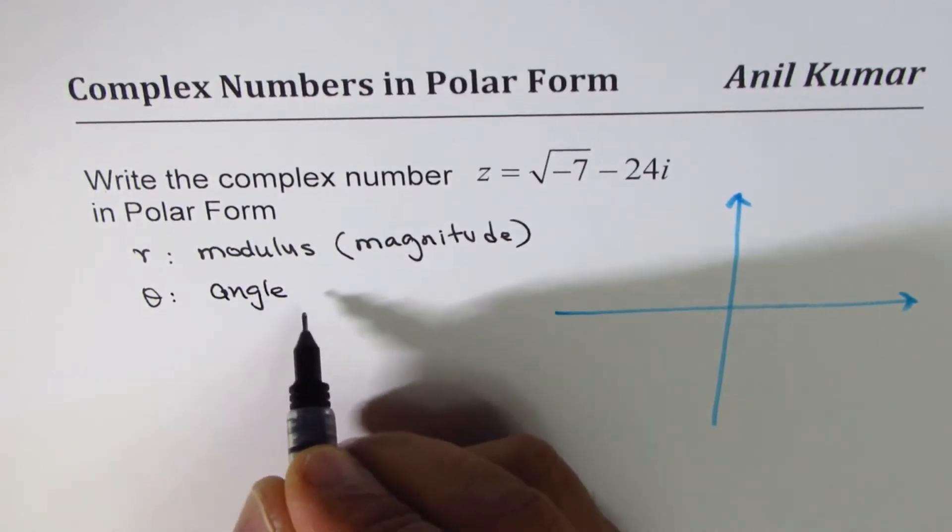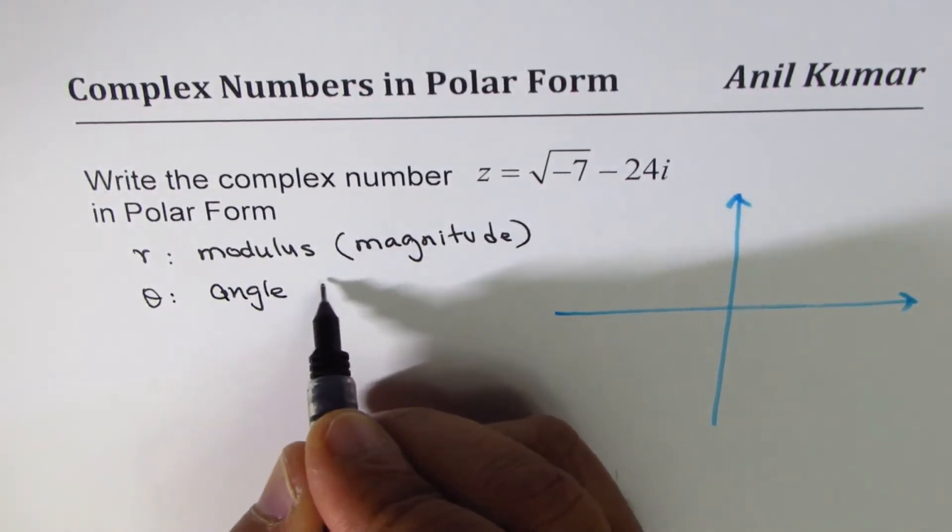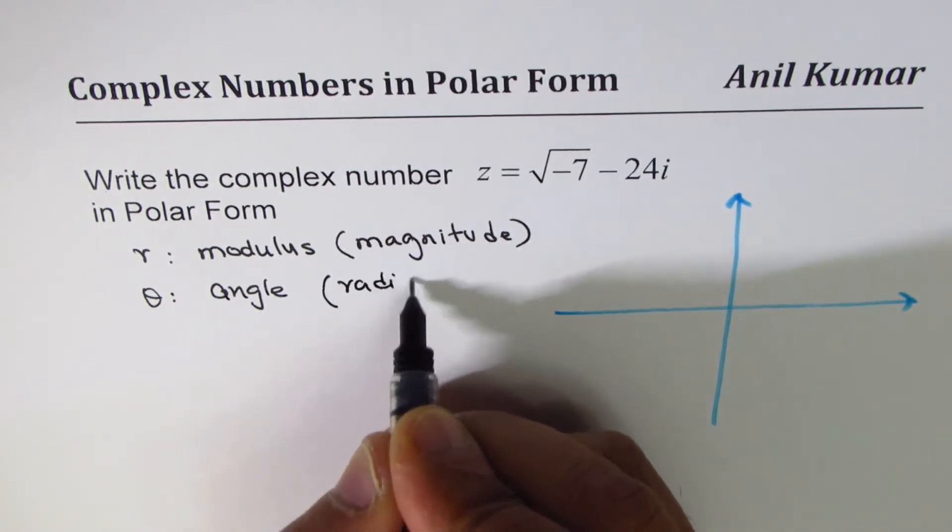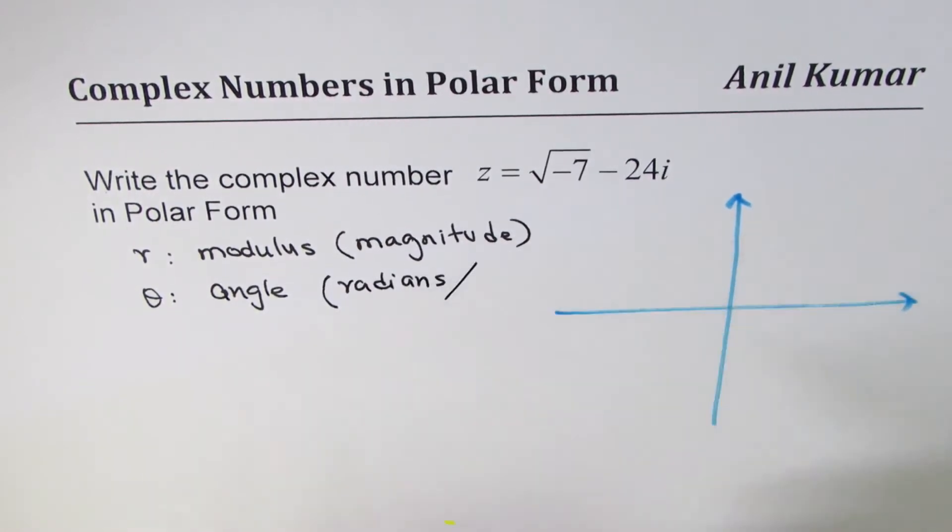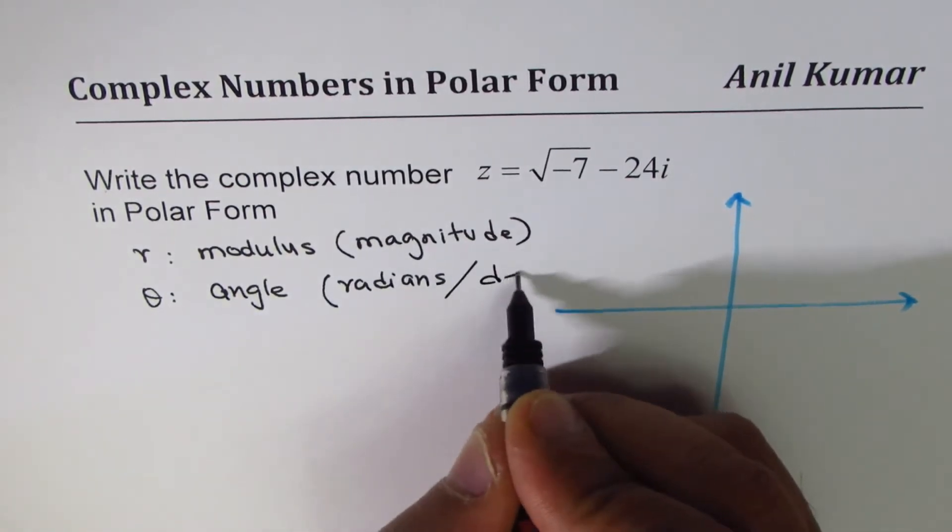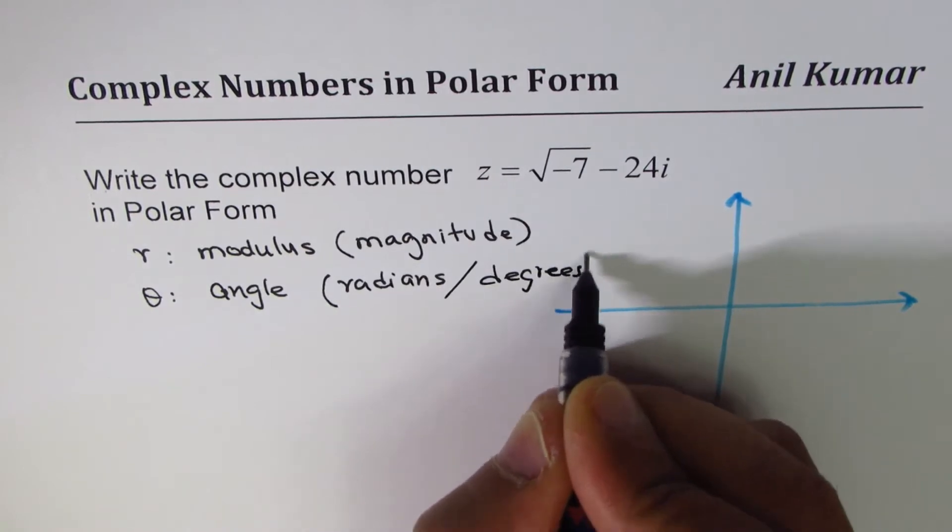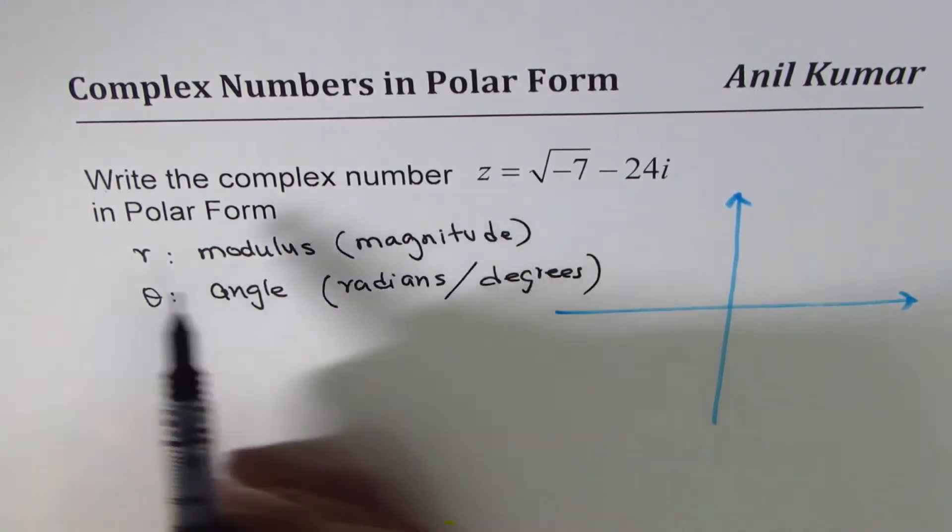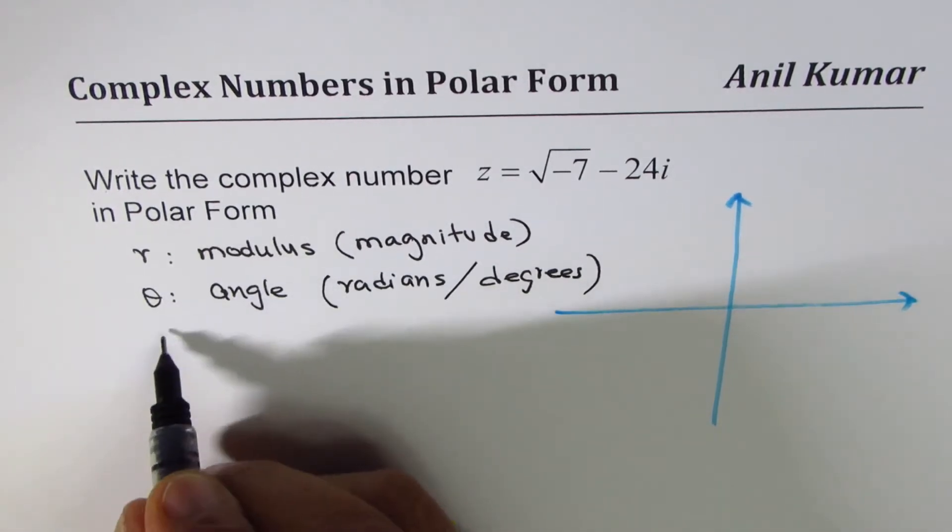Theta is the angle. We prefer to make it positive always. In general we should write this in radians, however some of my students haven't learned radians in grade 11, so we'll go for degrees also. Both are optional, nothing is wrong with either.